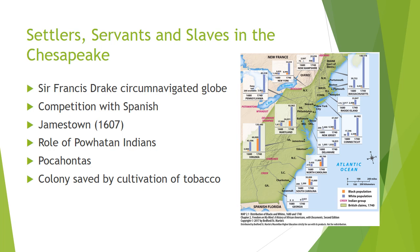Despite Pocahontas serving as a go-between for the Powhatans and the settlers, this alliance was not always peaceful. The colony was only saved from collapse by the discovery that a smokable hybrid of tobacco could easily be cultivated there. In 1617, Captain Samuel Argyle arrived to assume the governorship of Virginia and found the marketplace, streets, and all other spare places planted with tobacco. The boom in tobacco cultivation resulted in an increased demand for workers.